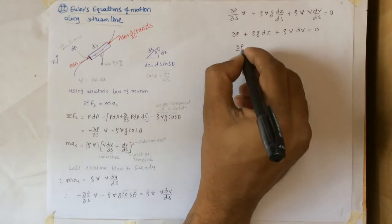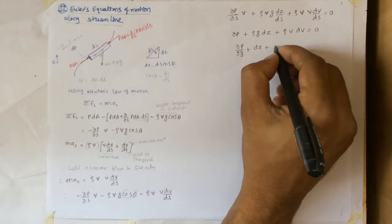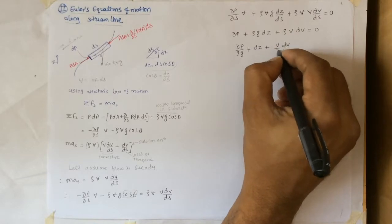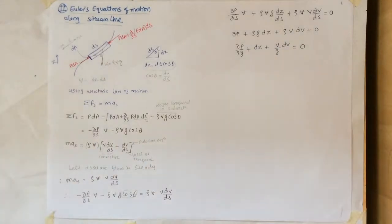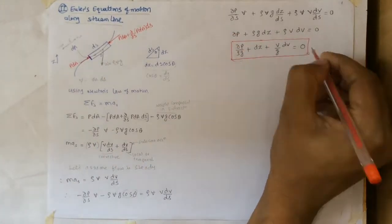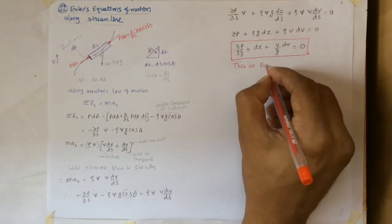And after dividing by rho g we get dp/(rho g) plus dz plus v/g dV equals to zero. This is the equation that we wanted to have. And this is Euler's equation of motion along streamline. This particular equation is very important in differential form.